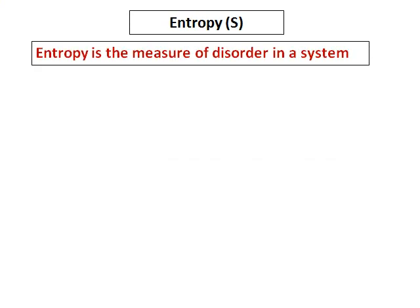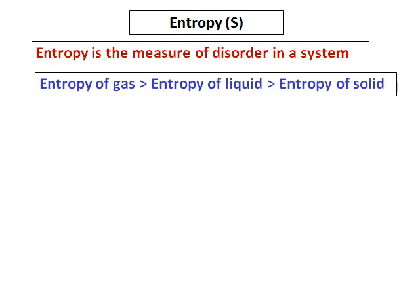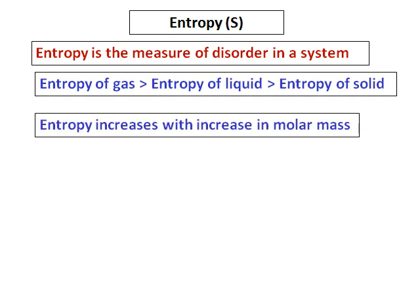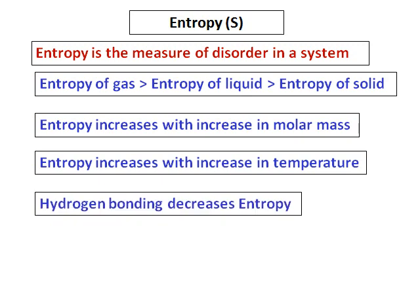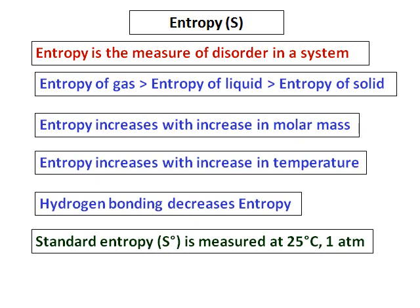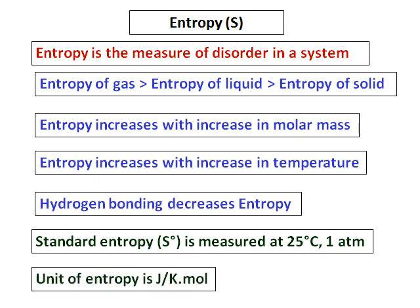Let's learn what entropy is. Entropy is the measure of disorder in a system. Entropy of a gas is greater than entropy of a liquid, which is greater than entropy of a solid. Entropy increases with increase in molar mass and with increase in temperature. Hydrogen bonding decreases entropy. Standard entropy, given the symbol S0, is measured at 25 degrees Celsius and 1 atmosphere. The unit of entropy is J per Kelvin mole.